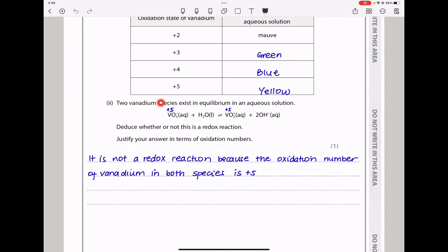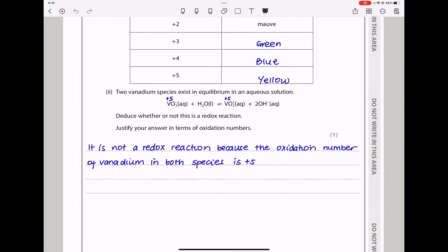Moving down here. Here they say, two vanadium species exist in equilibrium in an aqueous solution. This is plus 5 oxidation state, and that is plus 5. They say, deduce whether or not this is a redox reaction, and justify your answer in terms of oxidation numbers. Because this is plus 5, and that is plus 5, and in all these, oxygen is minus 2, while hydrogen is plus 1. We can say it is not a redox reaction, because the oxidation number of vanadium in both species is plus 5.